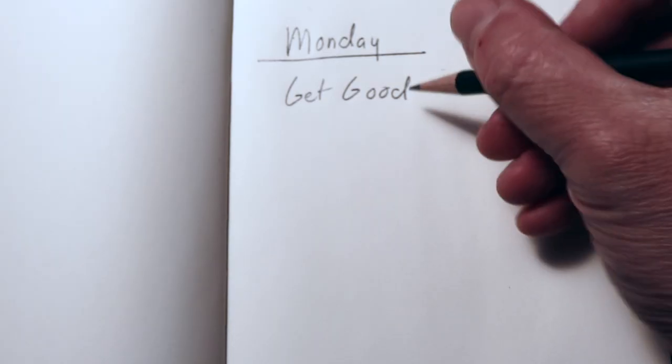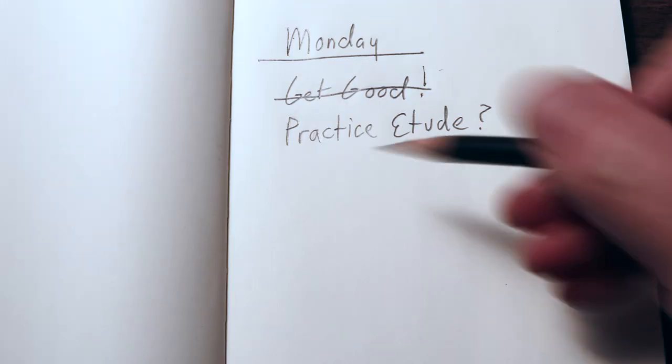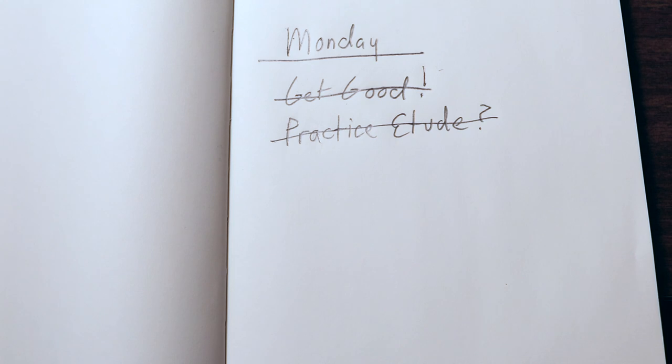Strategy number one: clarify the result you're after. Set not only a goal for each practice session, but micro goals within each session so you know if you're hitting your objectives. If you set your daily goal as "get good," it's too broad. Learning this month's etude is better, but still too broad — it's more than most of us can accomplish in one practice session.